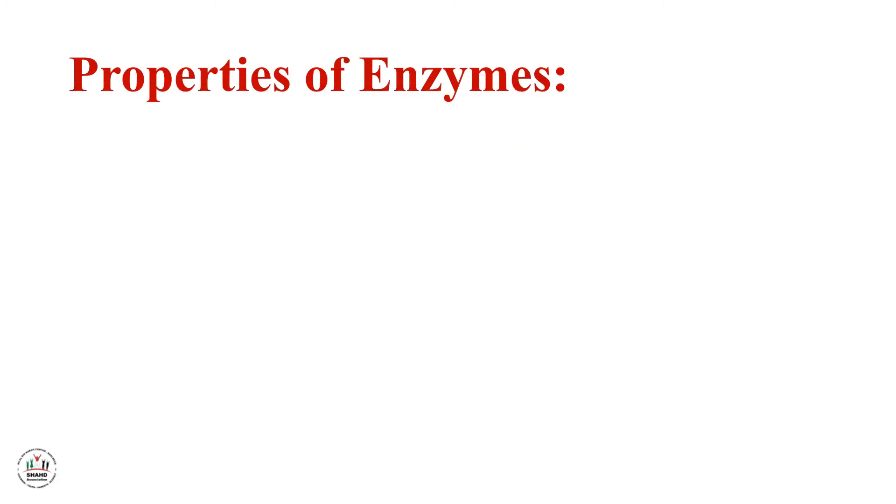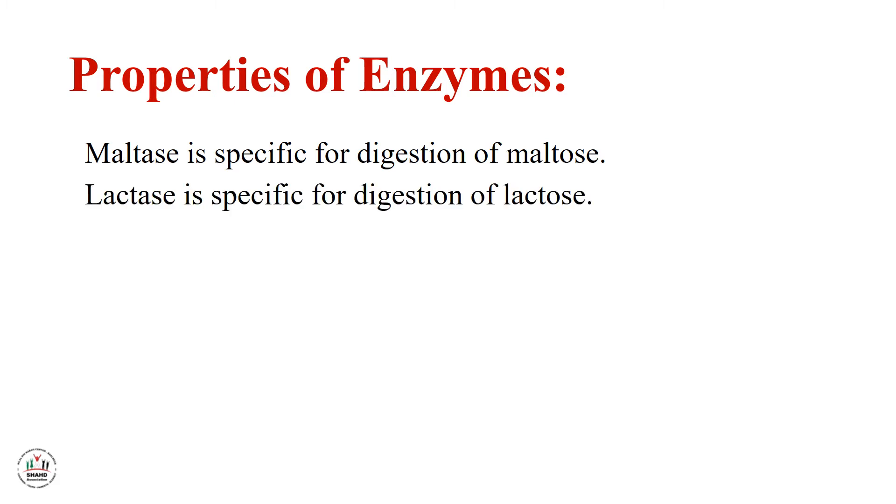عنا الmaltase هو عبارة عن إنزيم موجود بال intestinal juice، is specific for digestion of maltose. عنا الlactase is specific for digestion of lactose. عنا الsucrase is specific for digestion of sucrose. فإذاً عنا الmaltase واللactase والsucrase هن عبارة عن إنزيم موجودين بال intestinal juice وكل واحد بيشتغل على specific substrate.